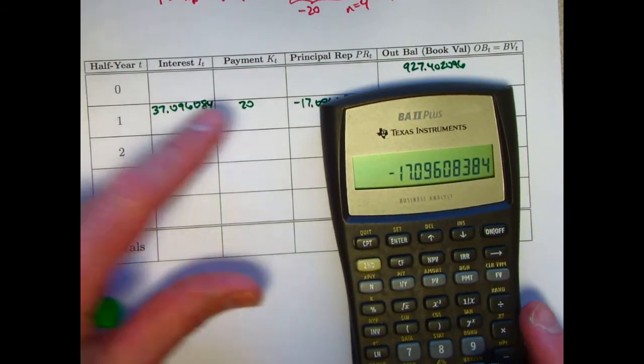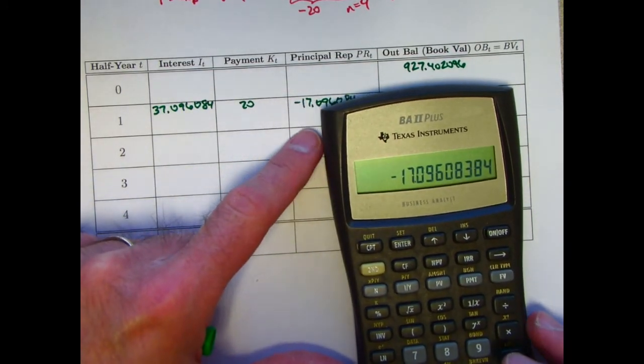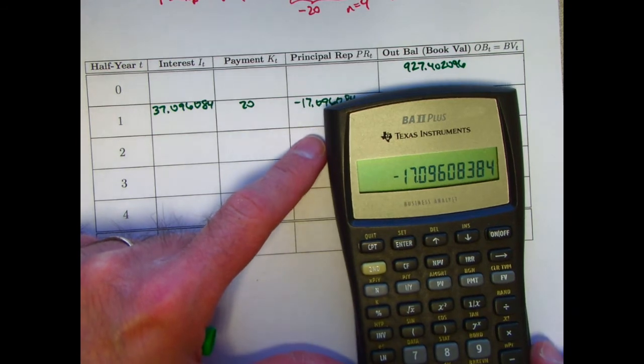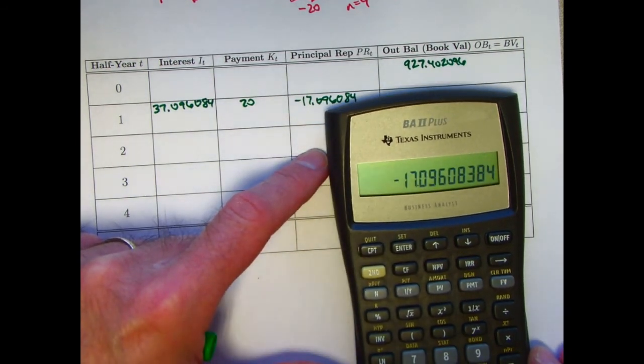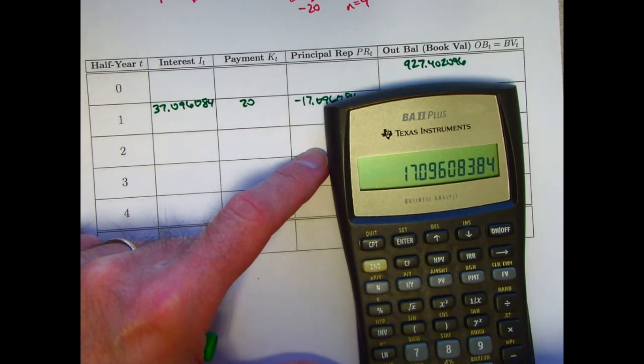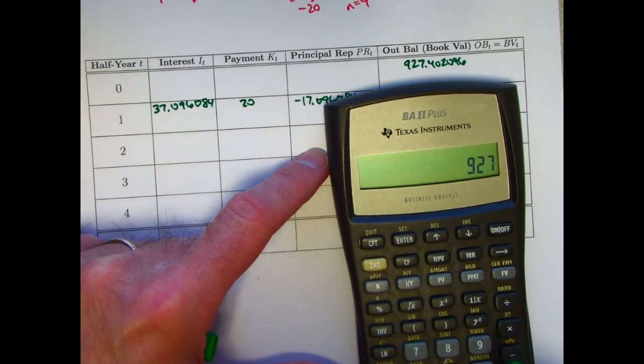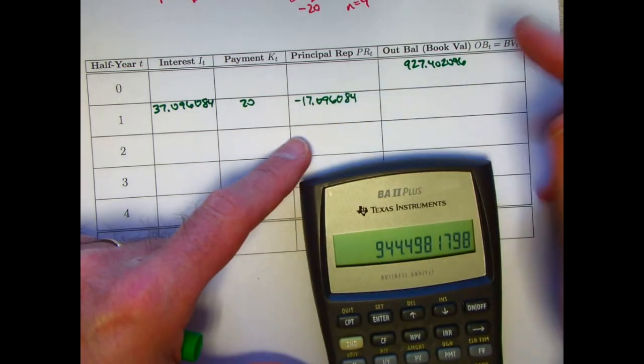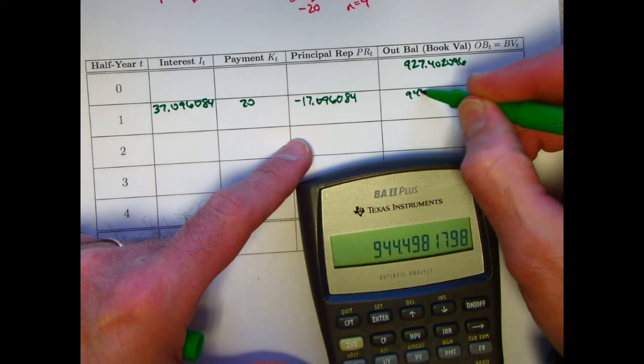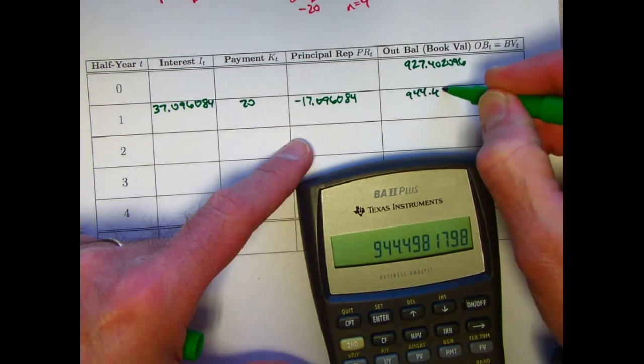Making your balance go up, I will, let's see, I'll take 927, I'll subtract this from 927, and by subtracting it from that, I will really end up getting a bigger number. So put negative there, plus 927.402096. The new balance at time 1 is 944.498180.